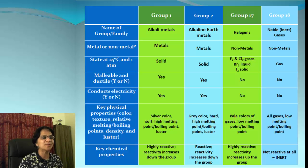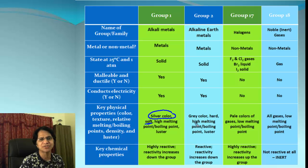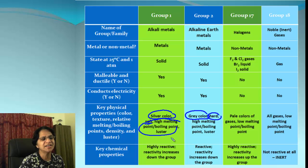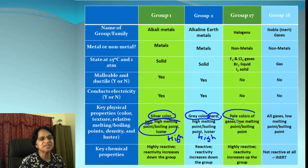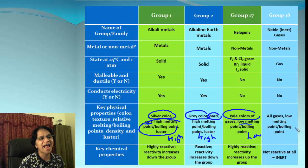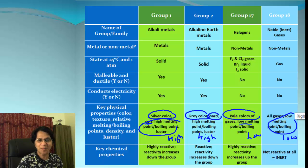Now let's look at key physical properties. Group 1 elements are silver in color and they are soft. Group 2 elements are mostly gray in color and hard. Both groups have very high melting and boiling points. Group 17 elements are pale in color and have low melting points. Group 18 are all gases and also have low melting points.